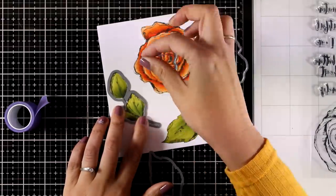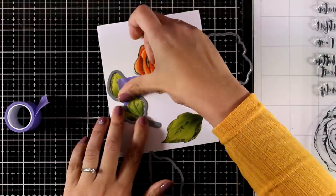I will use the matching dies to cut out the images. This way I will be able to pop them on my card and add dimension.